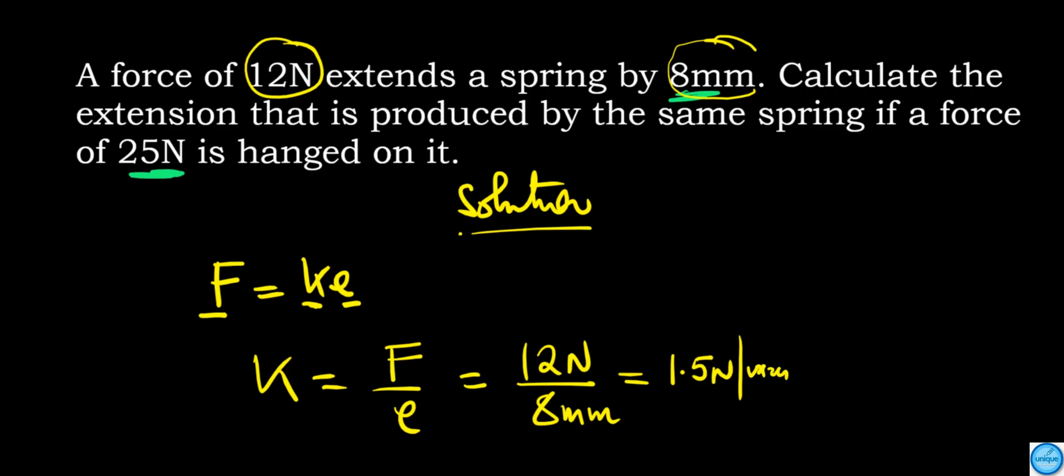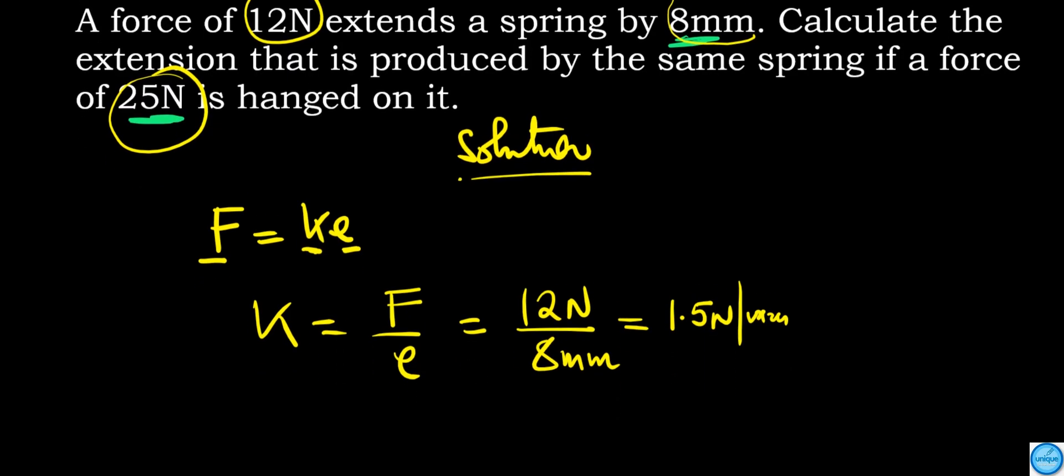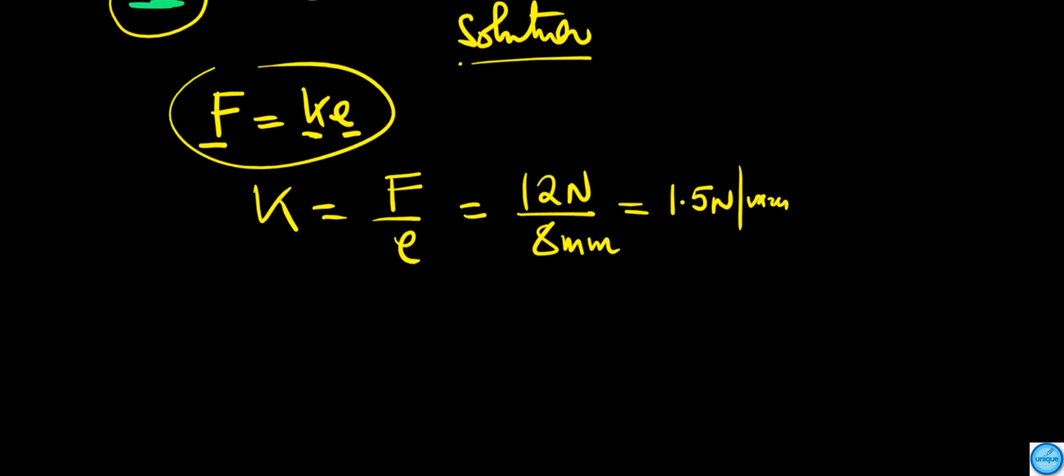That is our spring constant. The question now is to find the extension produced if the force is 25 Newtons hanging on the spring. We use F equals ke. So k is 1.5 Newtons per millimeter times the extension e. The force is 25 Newtons.